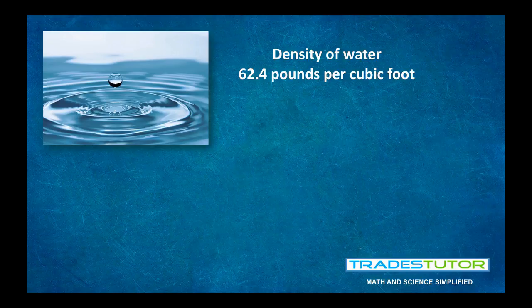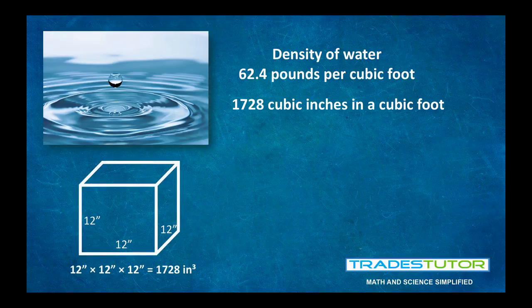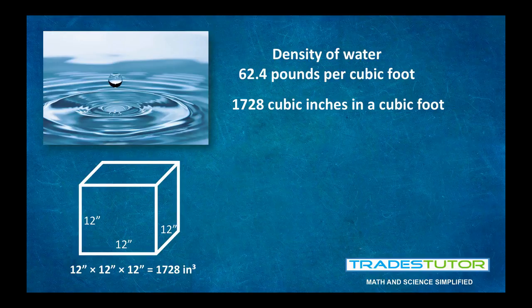Now, we're going to even break it down farther. We're going to find it in cubic inches. So, we need to know how many cubic inches are in a cubic foot. Well, that is 1728. And the math for that is over here to the left. A cubic foot is 12 inches by 12 inches by 12 inches. 12 by 12 by 12, 1728.